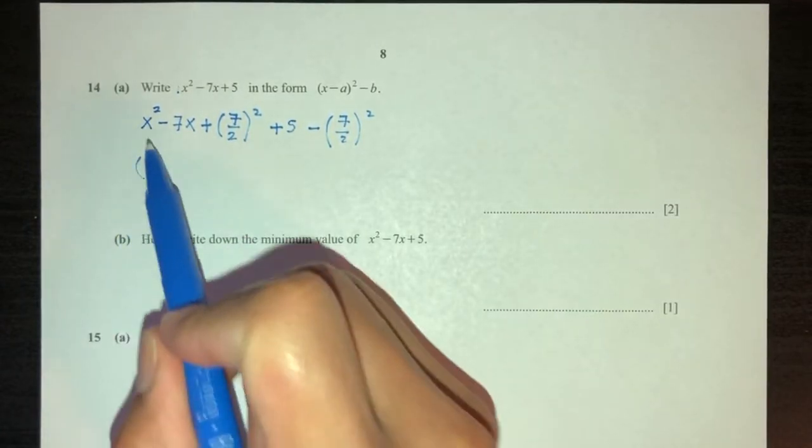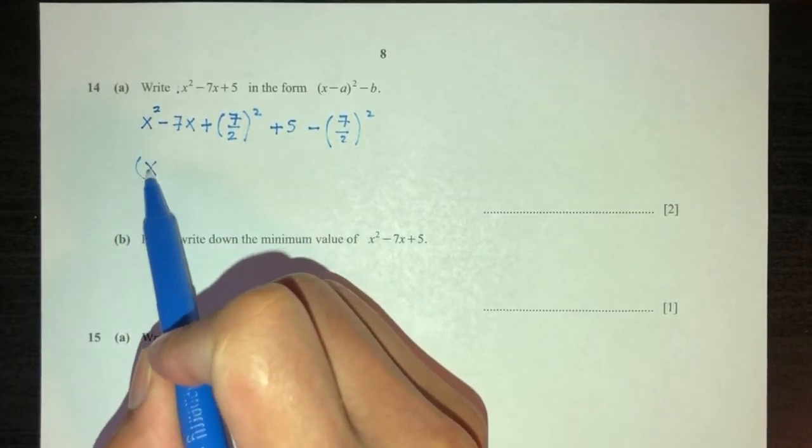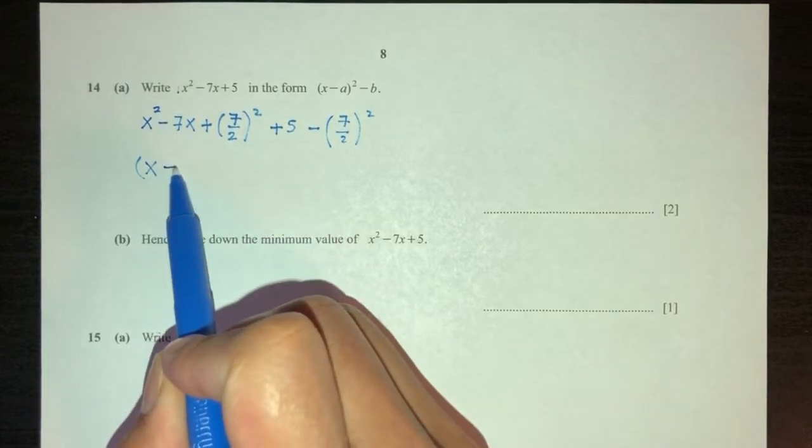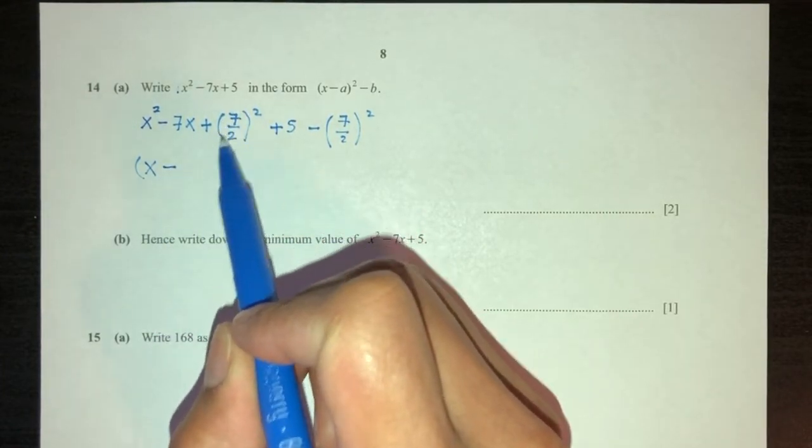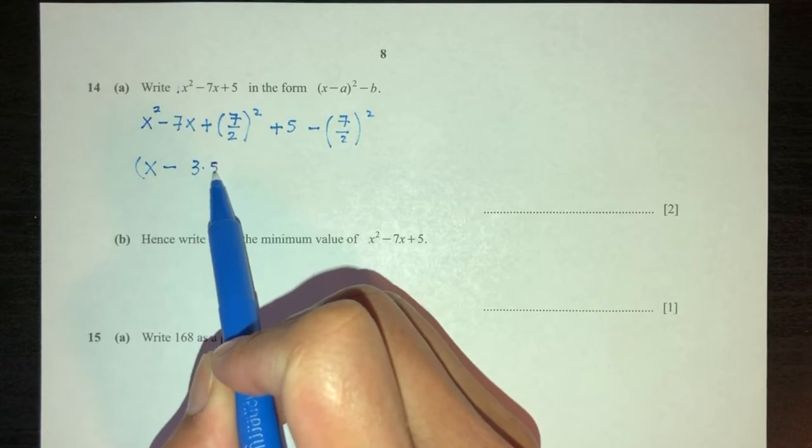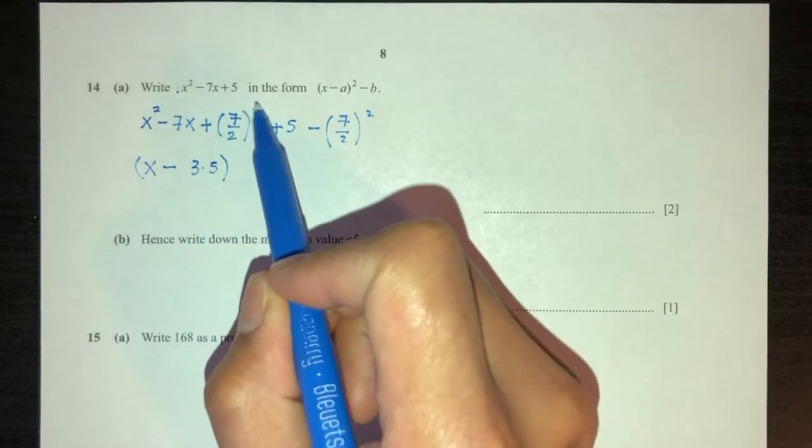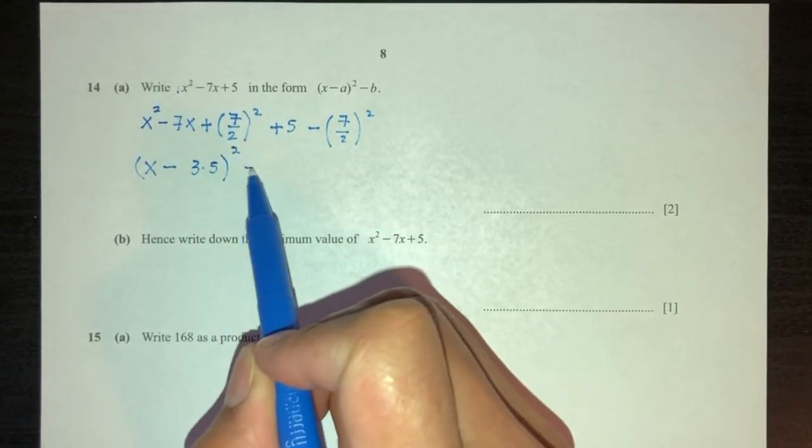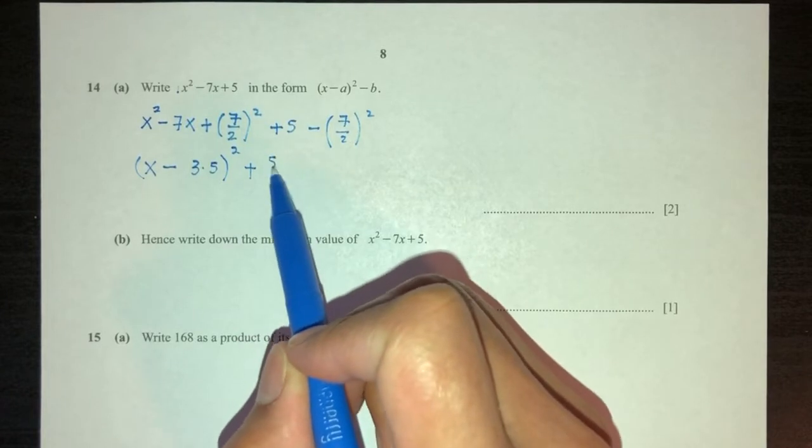Now we just have to simplify. Here you will have, we have x here that becomes x. Here we have minus, that becomes minus. And on the inside we have 3.5 or 7 over 2, you write that. Here we have square, you write square.